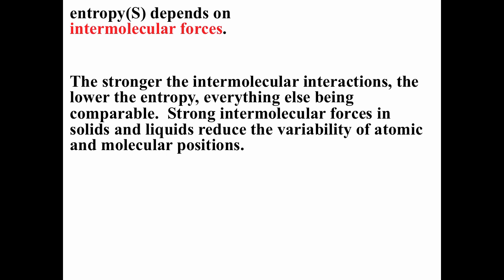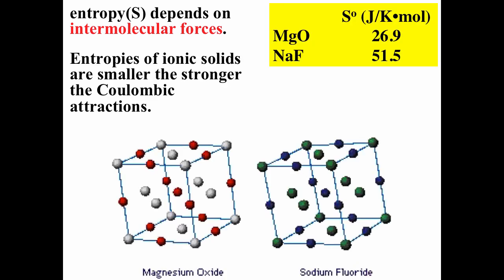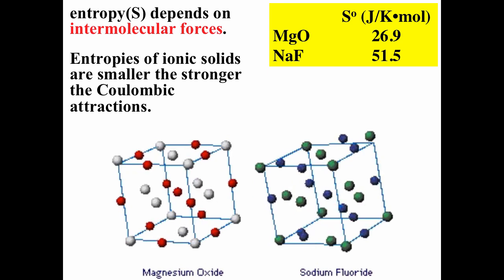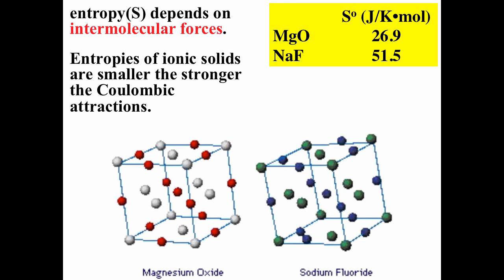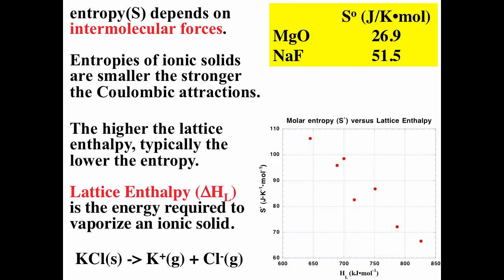Entropy depends on intermolecular forces. The stronger the intermolecular forces, the lower the entropy, everything else being comparable — you can imagine there are fewer configurations in terms of position or orientation. Looking at some ionic solids: the entropy for magnesium oxide is 26.9, and for sodium fluoride it's 51.5. Magnesium oxide is composed of plus-two and minus-two ions and has a much stronger ion-ion interaction than sodium fluoride, which is composed of plus-one and minus-one ions. Stronger intermolecular forces means lower entropy and fewer configurations.